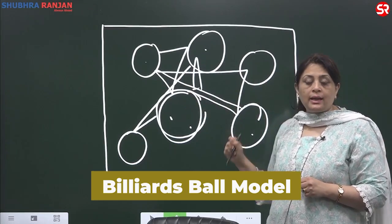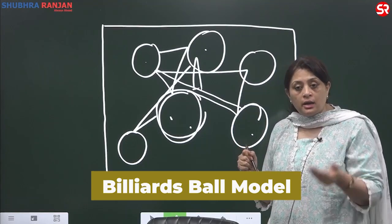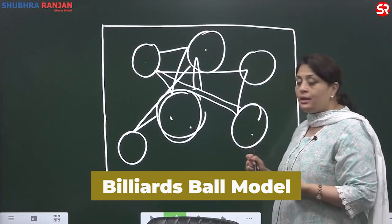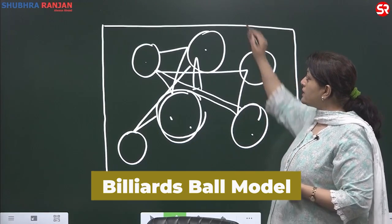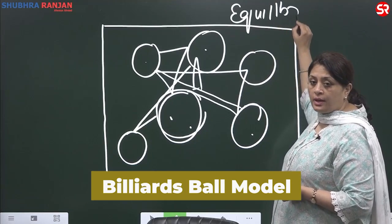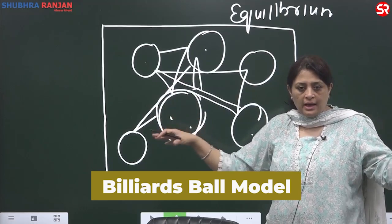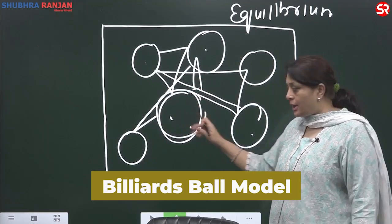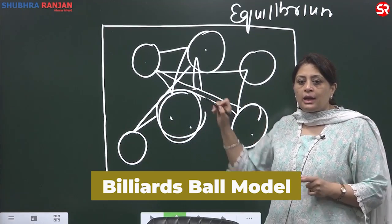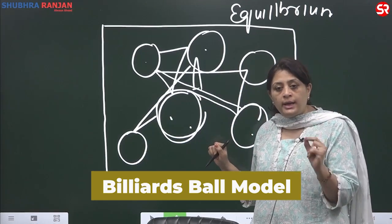It is like a game of billiards where nations are continuously colliding with each other. Why are they colliding? Because they all want to achieve equilibrium. To establish equilibrium, they will have to consistently collide. This is international politics, and it can be explained through the billiards ball model.